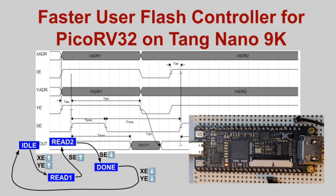This video is about a controller for the Gowen UserFlash that I wrote in Verilog and integrated into my Pico RV32 Mini SoC on the Tang Nano 9K FPGA development board. I'll briefly present its design and compare its performance to Gowen's soft IP controller that was the subject of my last video. UserFlash is flash integrated on the FPGA for application use.